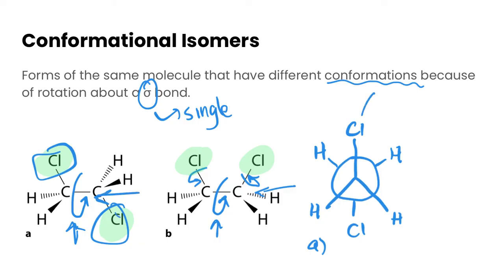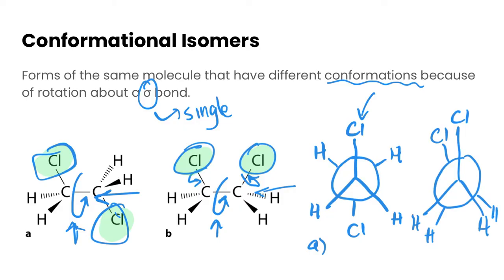Now this is really energetically favorable because those chlorines are big. They want to be as far away from each other, and so this is quite an energetically favorable conformation. The other one where the chlorines are both at the top here looks a little bit different. So this is the one where it's got two chlorines up at the top there, and this is what its Newman projection would look like.